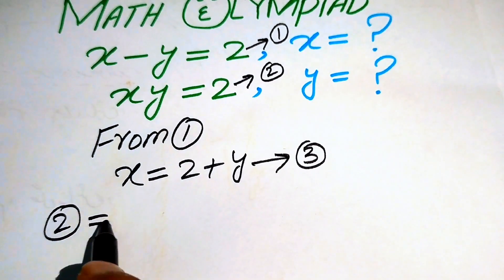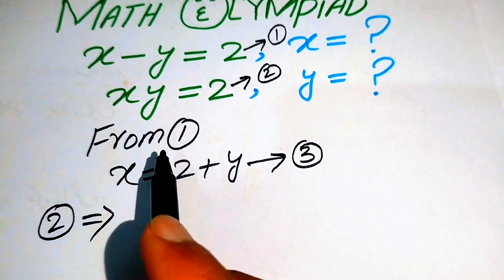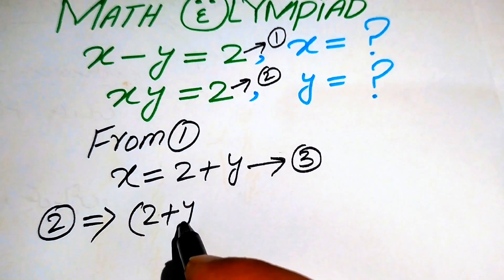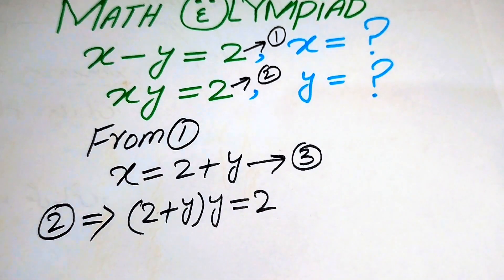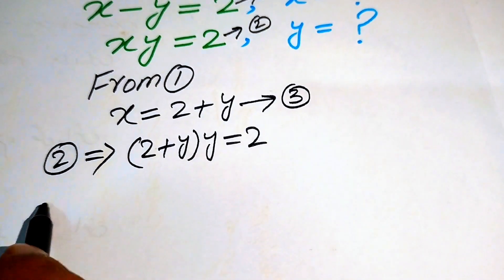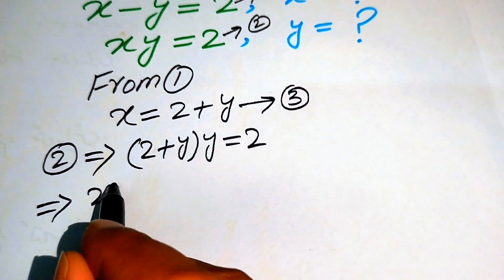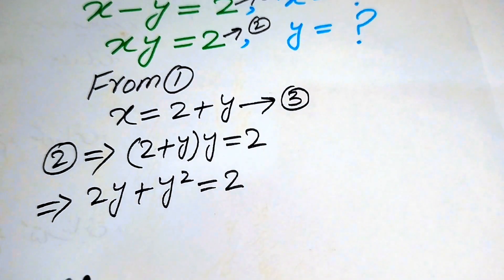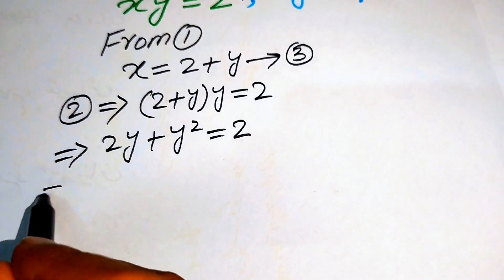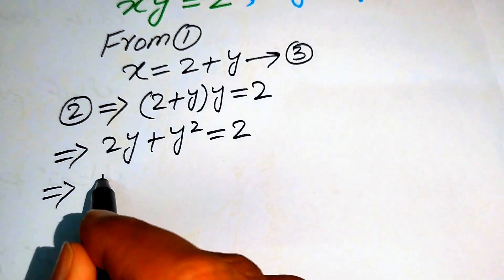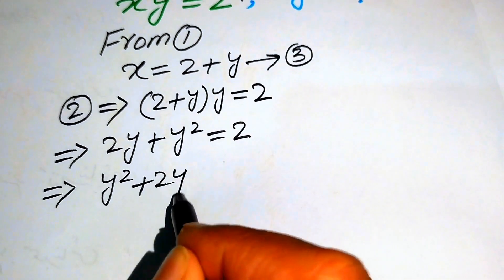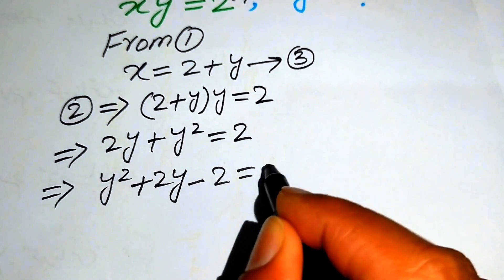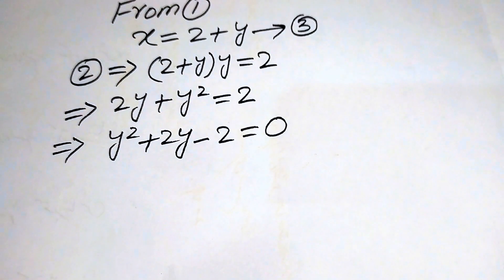We put the value of x into equation number 2. Substituting x with 2 plus y gives us (2 plus y) times y equals to 2. Multiplying y through both terms gives 2y plus y squared equals to 2. Rearranging, we get y squared plus 2y minus 2 equals to 0.